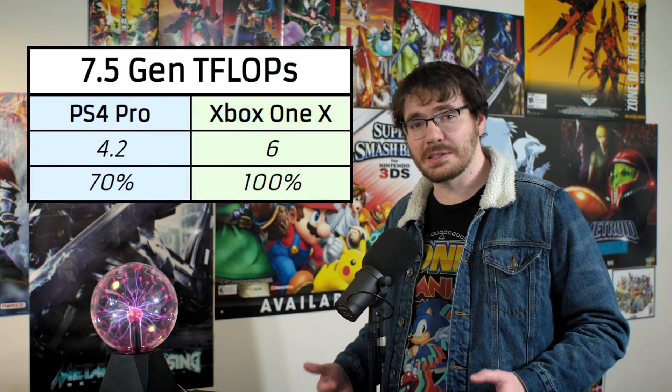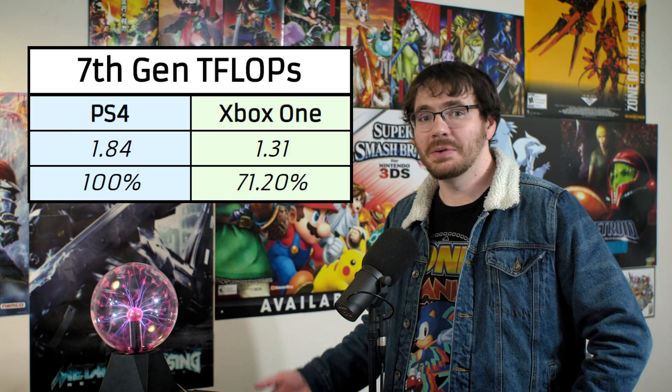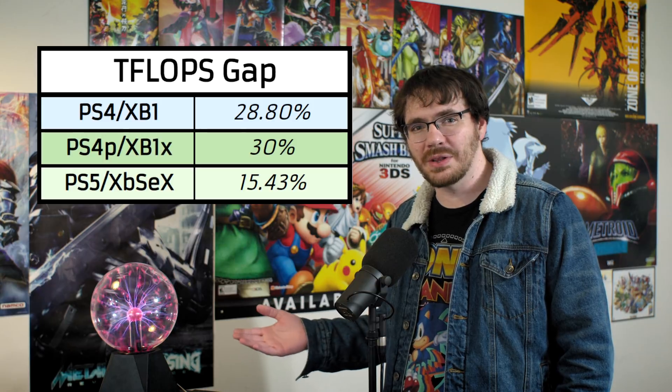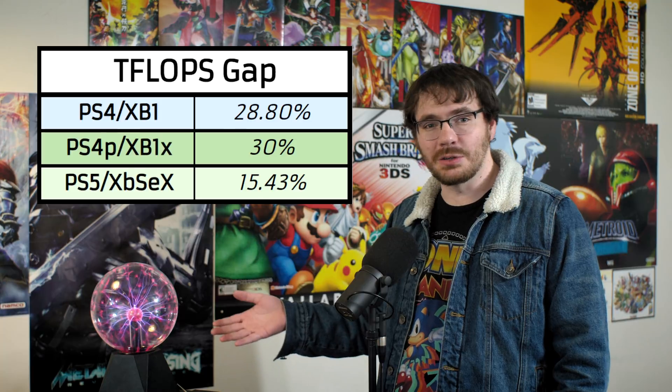The divide in teraflops performance between these two systems isn't even that wide, historically speaking. The PS4 Pro was capable of 30% fewer teraflops than the Xbox One X, and the gap between the PS4 and Xbox One was also about as wide, with the Xbox One having 28.8% less performance than the PS4. With that in mind, the teraflops performance gap of the next-gen systems is nearly half of what it was for the last two sets of systems from Microsoft and Sony. Combining that with the diminishing returns on performance, I'm certain visual differences between these two consoles won't be radical. In fact, I can visualize the difference right now.